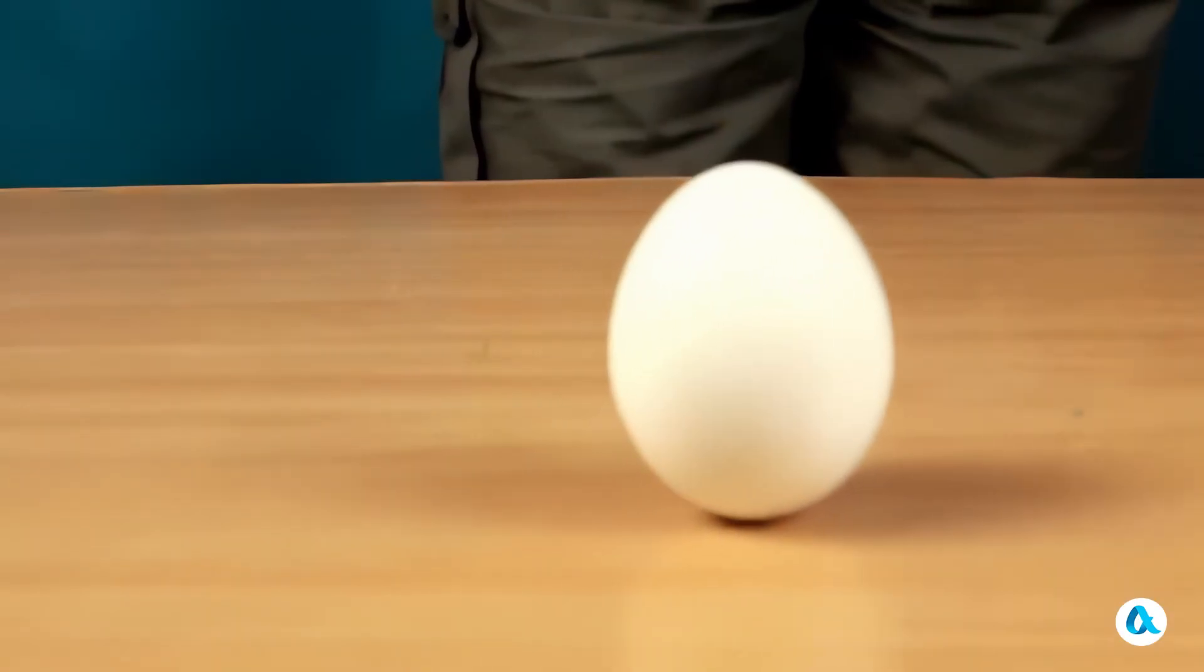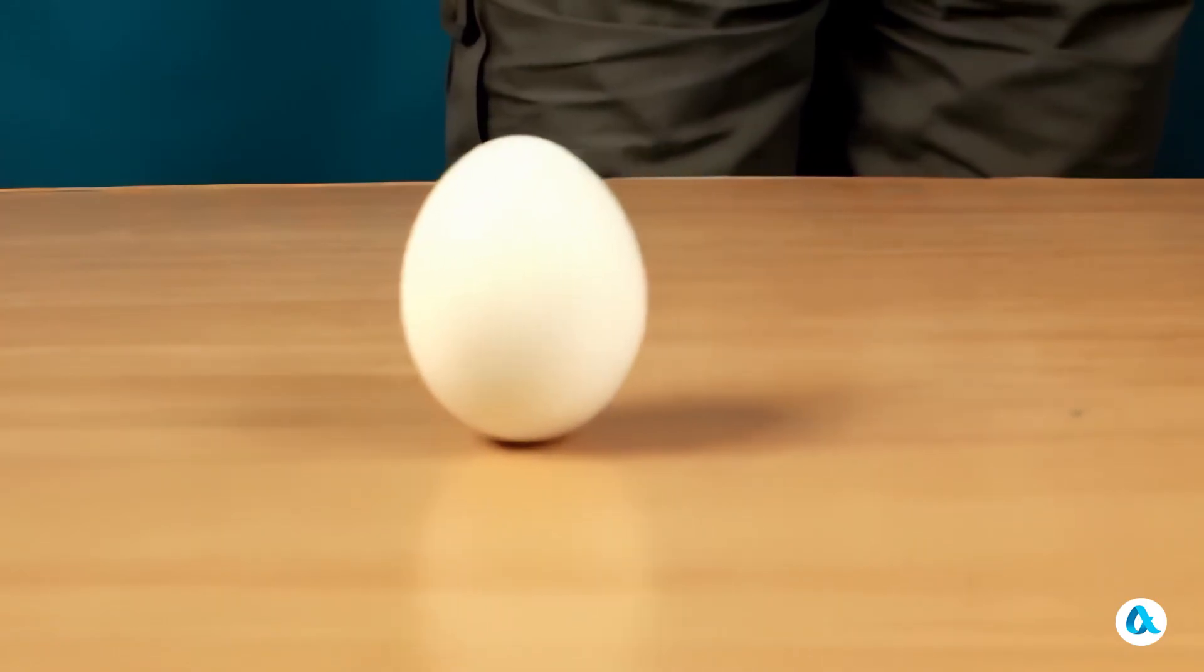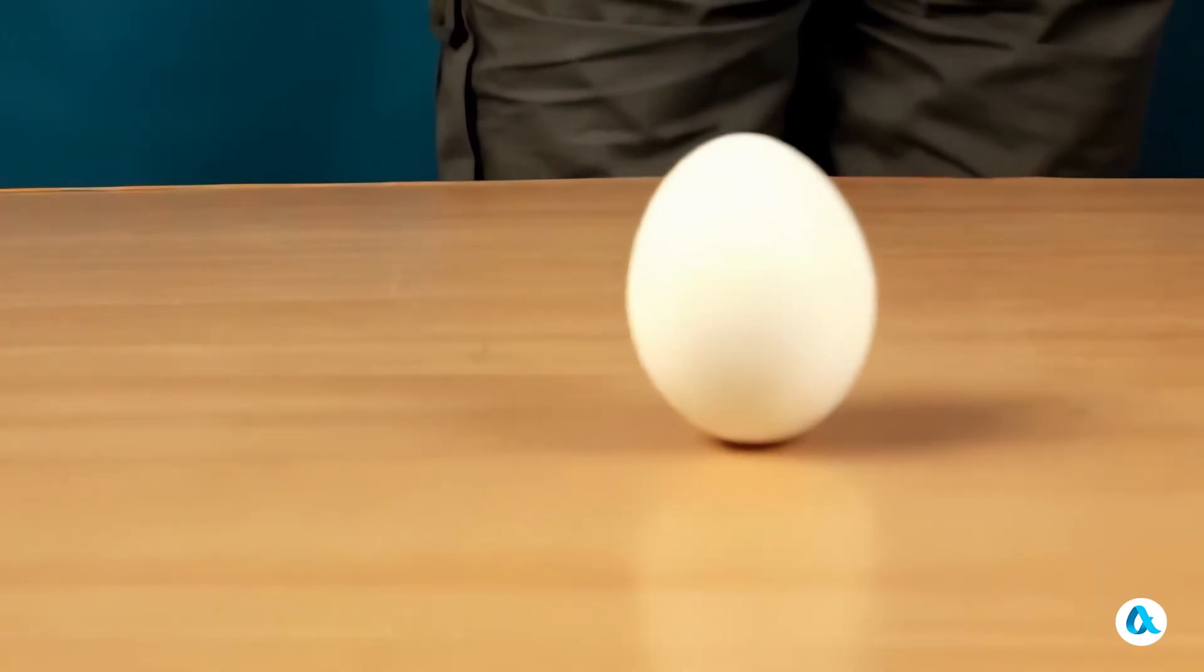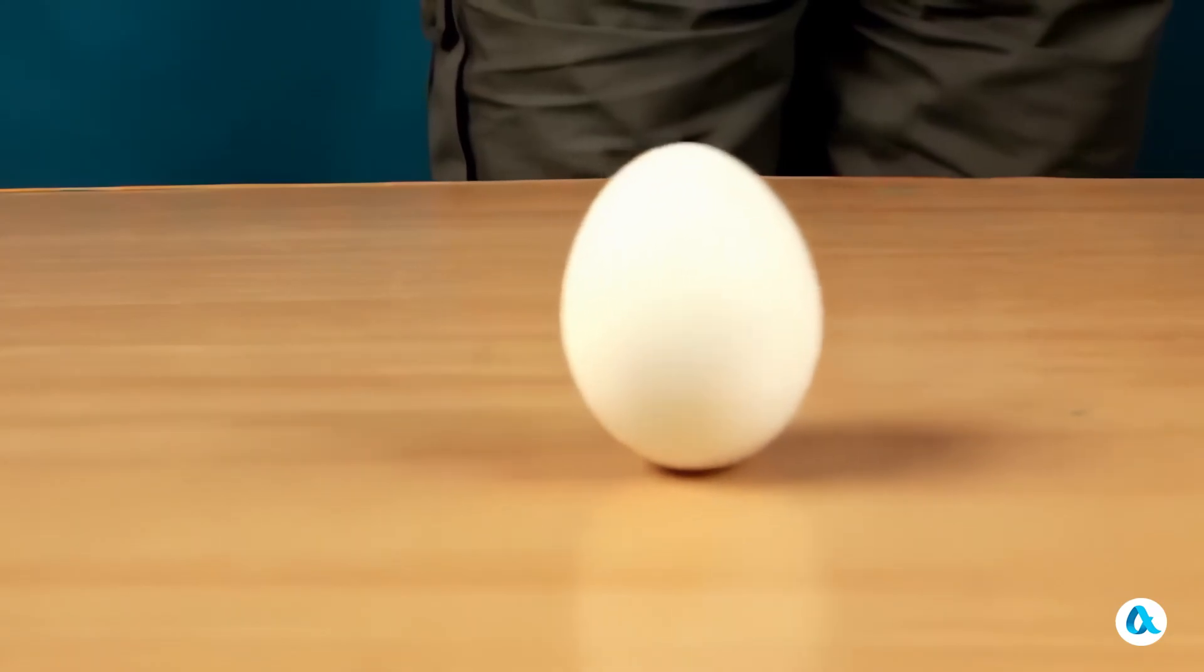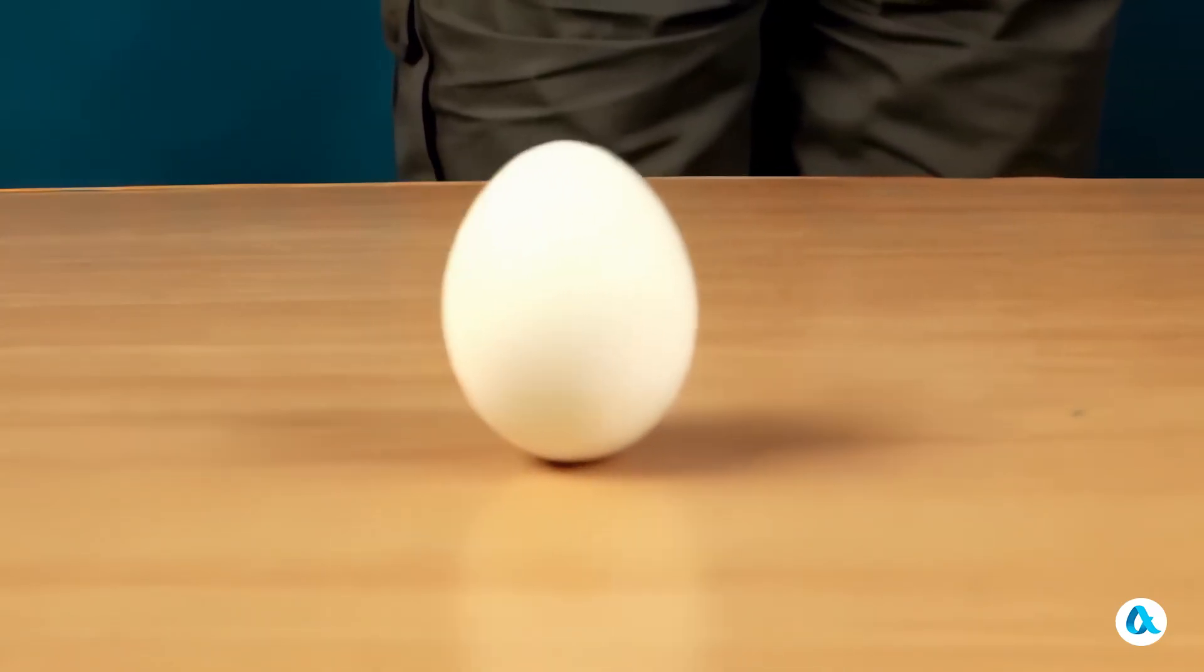This experiment seems quite unexpected. Due to the rotation, the stable and unstable positions of the egg sort of switch places, and the spinning egg doesn't lower but, on the contrary, raises its center of gravity as high as possible.